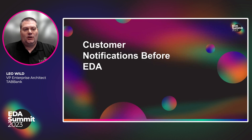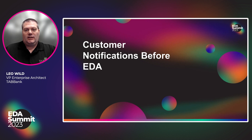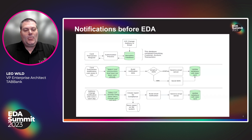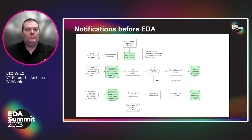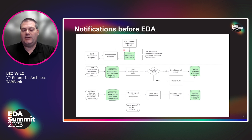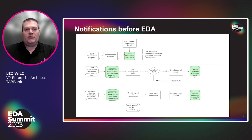How did our architecture look before Tab implemented event-driven architecture? It was a challenge, and this is a high-level overview. If a card transaction came through and went into our authorization process, it would say yes or no and save that transaction into a big monolithic database containing customer information, card information, and all of that. Address changes followed a different path but still hit that same monolithic database, returning to the customer that the address change was completed.